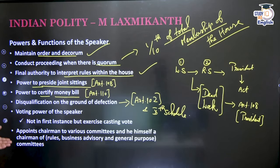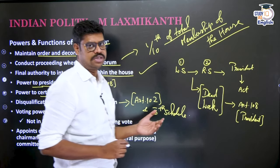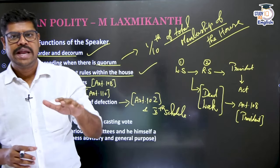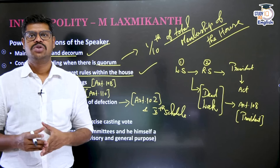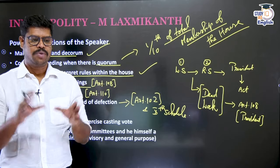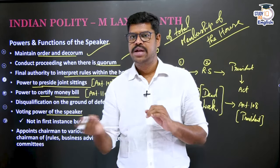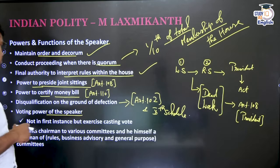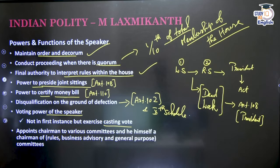Regarding the voting power of the Speaker — the Speaker does not normally vote in the first instance, in order to ensure his independence and impartiality. However, he votes in case of a tie, i.e., equality of votes. To break the tie — when the number of votes for and against a proposal is the same — the Speaker may exercise what is called the casting vote. This power is there with the Speaker.